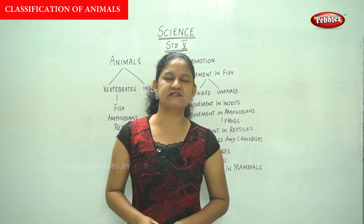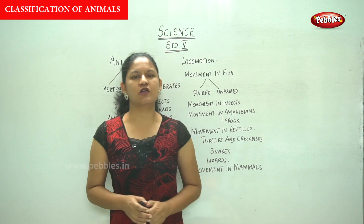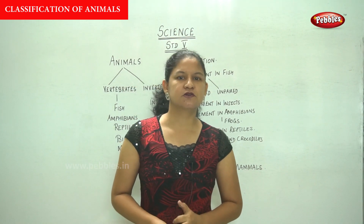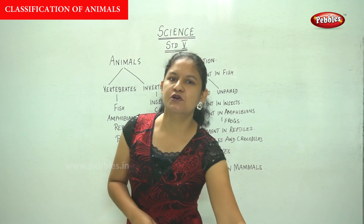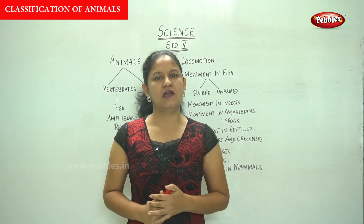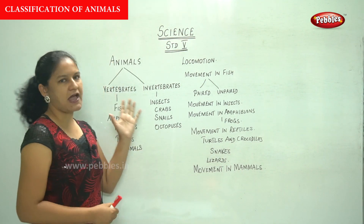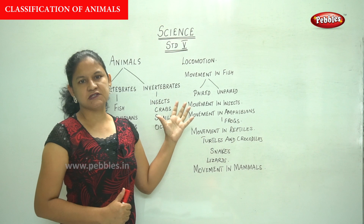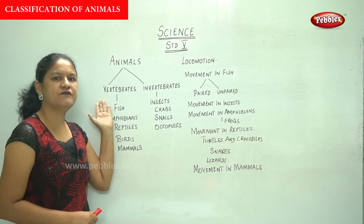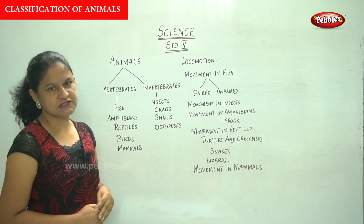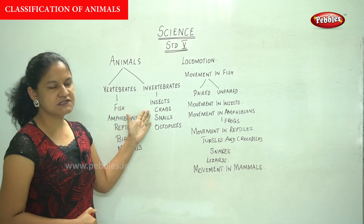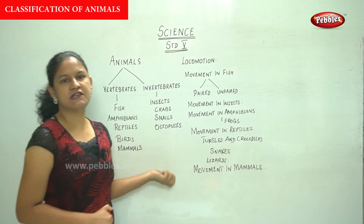Welcome to Pebbles channel. We are talking about animals and their adaptations to their surroundings. Animals are divided into two groups based on the presence or absence of backbone: vertebrates and invertebrates. Examples of invertebrates are insects, crabs, snails, and octopuses — all of these do not have a backbone.